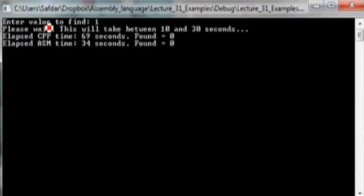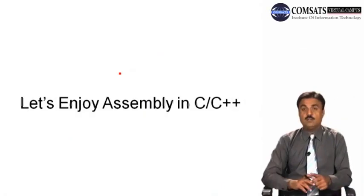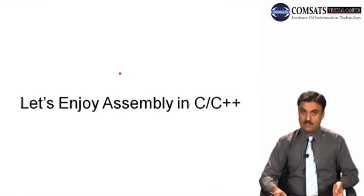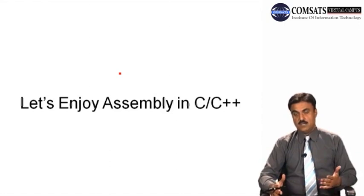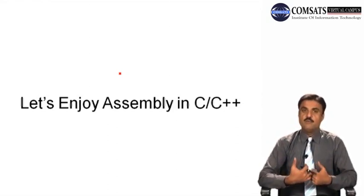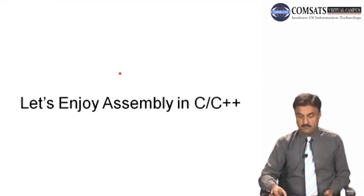The output shows something like: enter value to find — enter 1, please wait (10 to 30 seconds). Elapsed time for C++ is 62 seconds, found = 0. Elapsed time for assembly is 34 seconds, found = 0. This demonstrates the significant speed advantage of the hand-written assembly function over the equivalent C++ function.